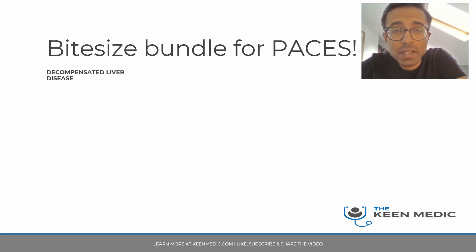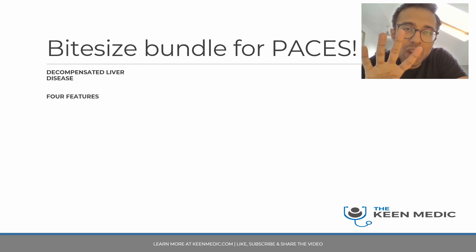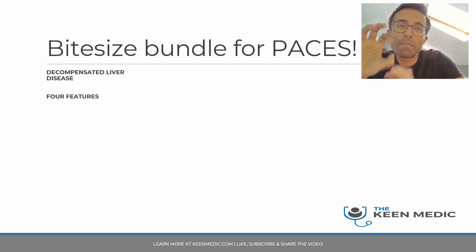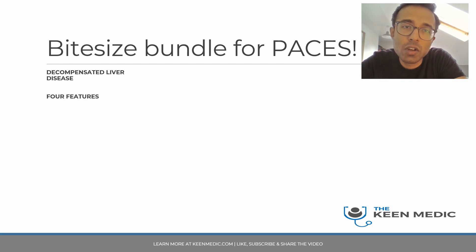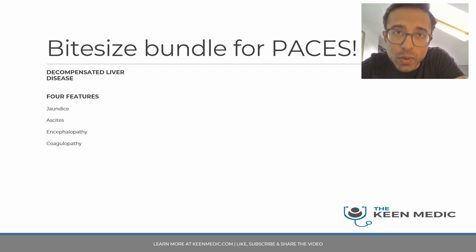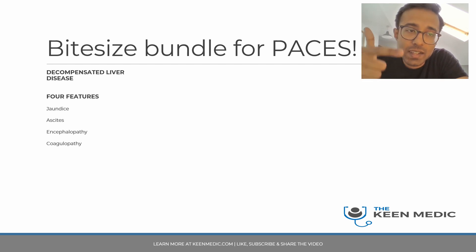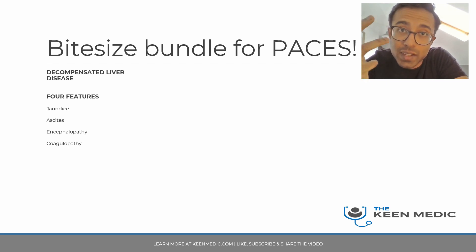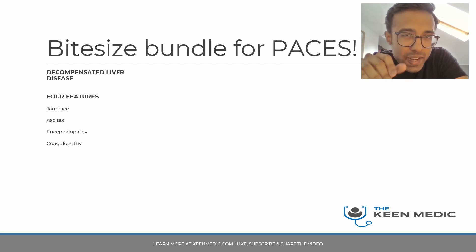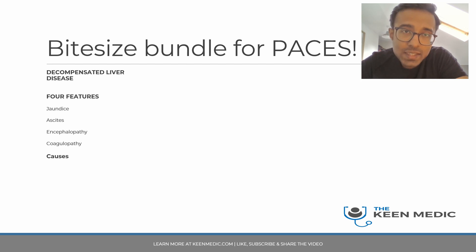Here's the bite-sized bundle for PACES. Albert has decompensated liver disease. There are four cardinal features of decompensation — four pillars to look out for: jaundice, ascites, encephalopathy, and coagulopathy. These four components are fairly easy to remember.